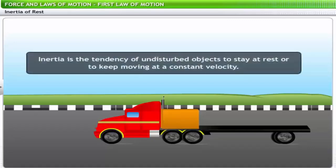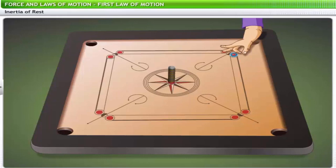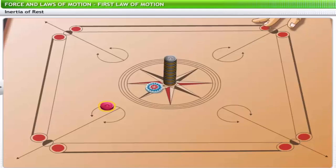This tendency of undisturbed objects to stay at rest or to keep moving at a constant velocity is called inertia. You can see this concept in a game of carrom: if a fast-moving striker hits a vertical stack of coins, sometimes only the bottommost coin is pushed out and the rest remain intact. The stack of remaining coins comes down vertically, retaining its position of rest, because no force was applied directly on them.